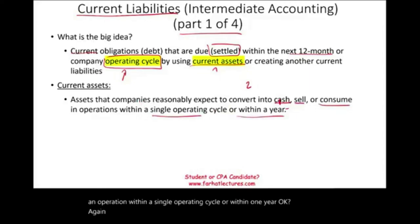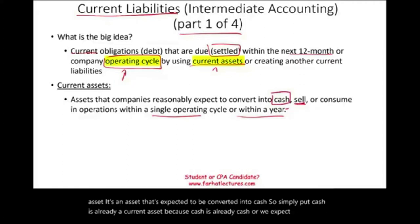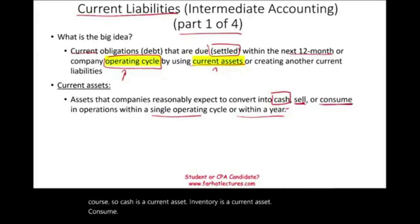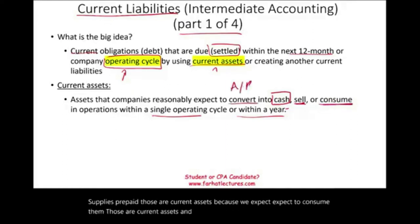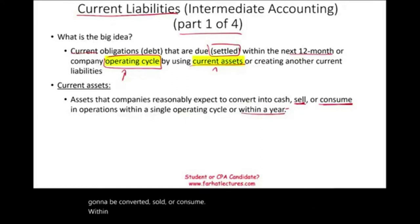We're talking about the operating cycle again. A current asset is an asset expected to be converted into cash — cash is already a current asset. Inventory is a current asset because we expect to sell it. Supplies and prepaid are current assets because we expect to consume them. Accounts receivable is a current asset because we convert it into cash. All of these are considered current assets because they will be converted, sold, or consumed within one year or the company's operating cycle.